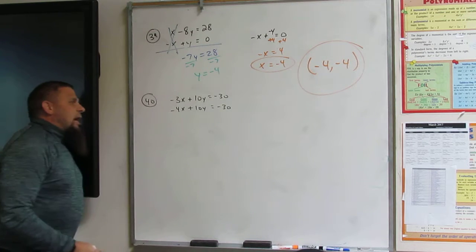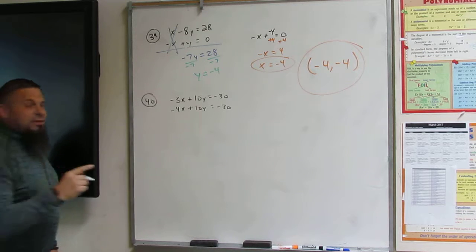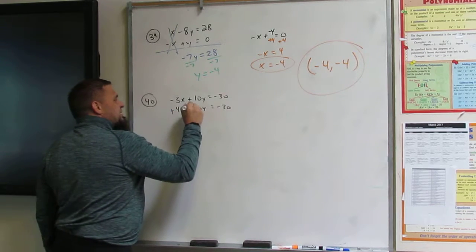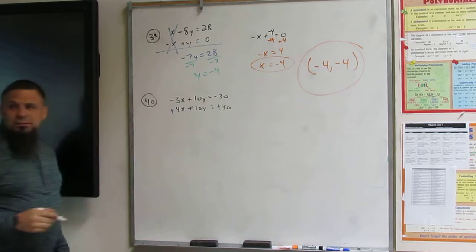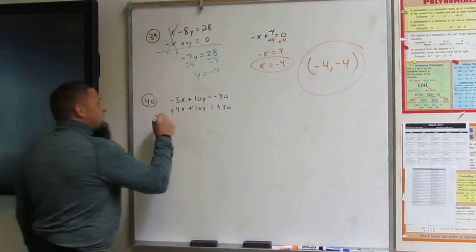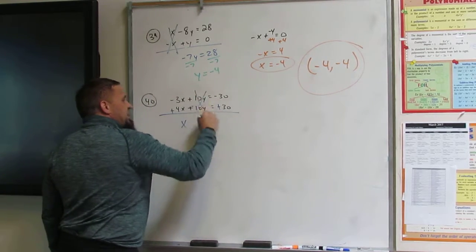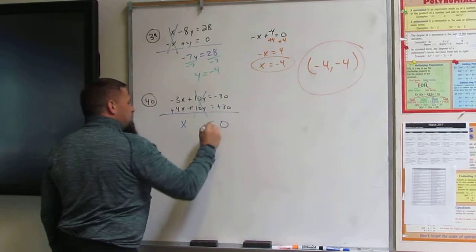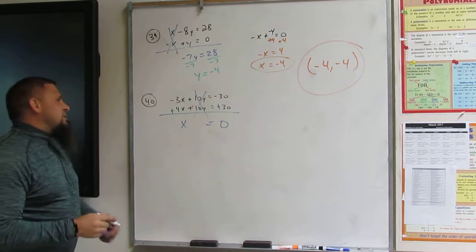So then I can do the same thing with this guy except I have to change their signs. Once I change their signs, I add them up. This is x, this is nothing, and this is 0. X is 0. Oh, that was easy.